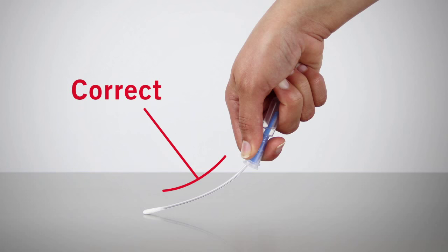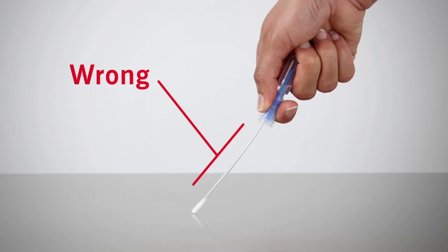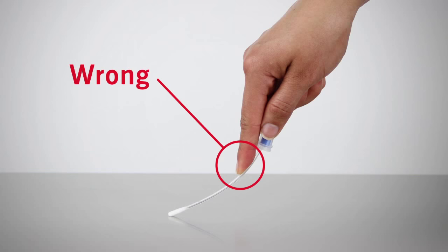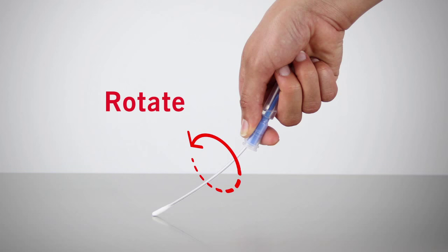Apply sufficient pressure to maximize sample collection and improve the accuracy of test results. Be sure not to touch the swab shaft when collecting sample, as this could contaminate the test and cause inaccurate results. Rotate the swab tip while swabbing to ensure maximum sample collection.